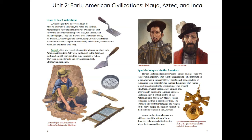Spanish letters and records also provide information about early American civilizations. Why were the Spanish in the Americas? Starting about 500 years ago, they came in search of riches. They were looking for gold and silver, spices and silk, adventure and conquest.